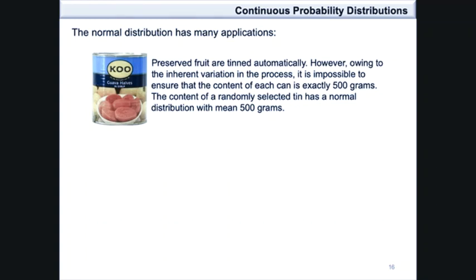the contents of most tins will be around 500 grams, with the contents of fewer tins being extremely larger than 500 grams or much less than 500 grams. In this case, the normal distribution becomes an appropriate distribution to fit this type of data.